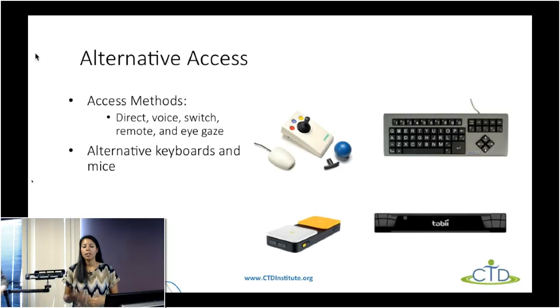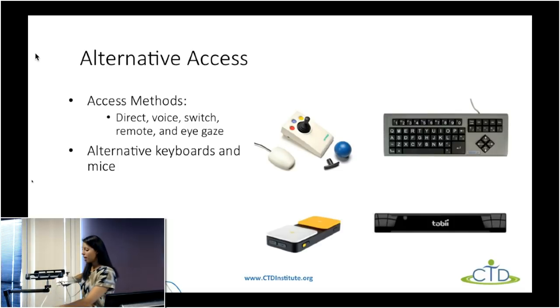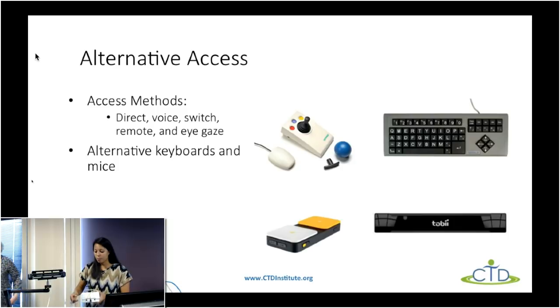Next we're going to talk about alternative access. A lot of times we need to figure out a different computer setup for people with disabilities if they aren't able to use a traditional mouse or keyboard — and that's where alternative access comes in. Now that many people are using tablets, alternative access also applies to smartphones and tablets. There are a variety of different types of tools available to help support individuals who may not be able to type on a traditional keyboard or need a different type of mouse.